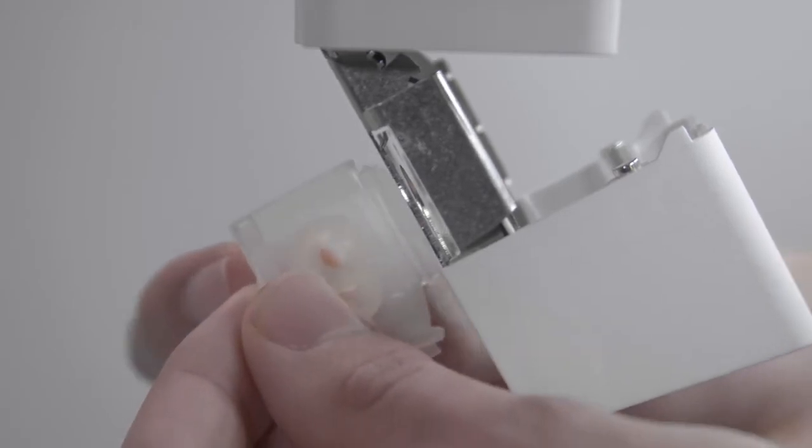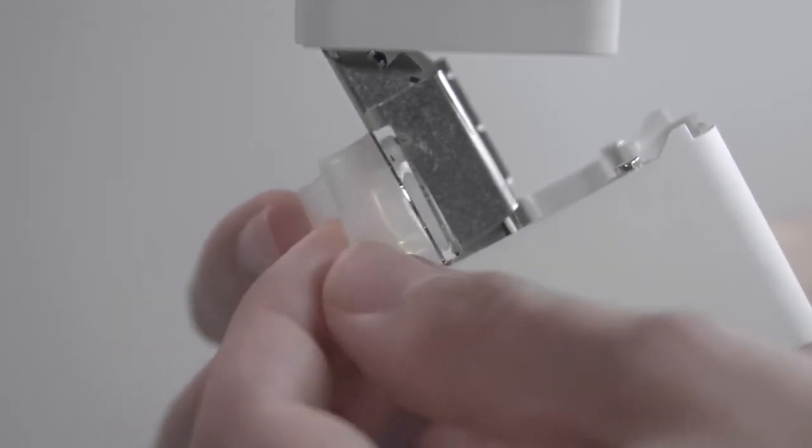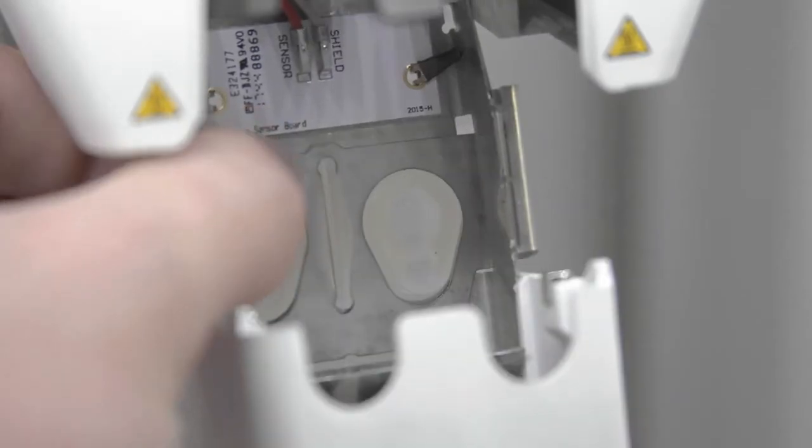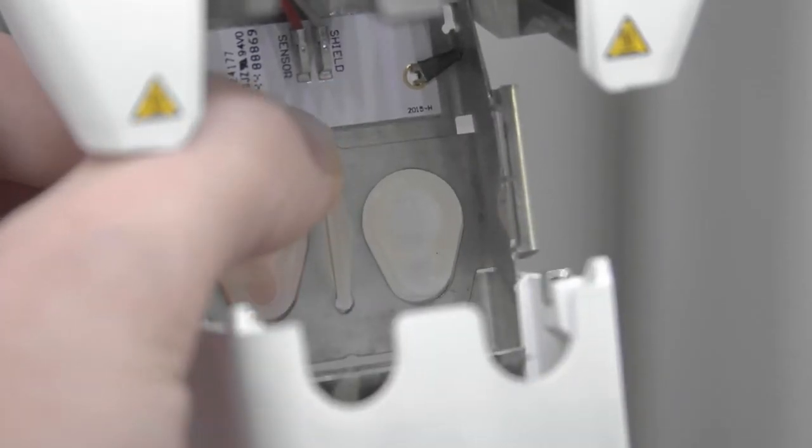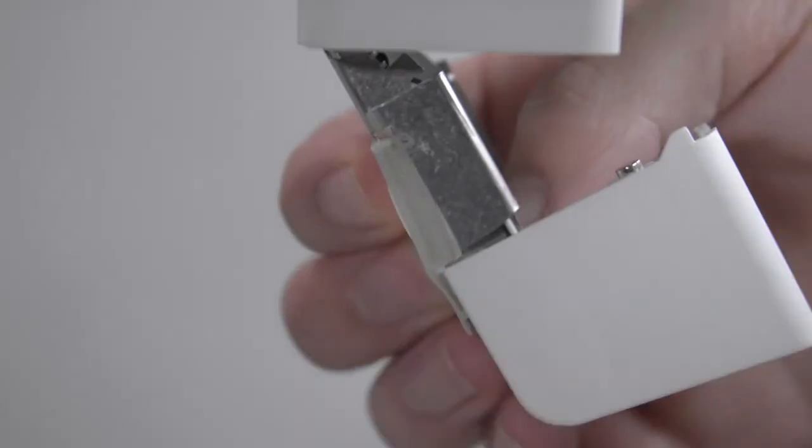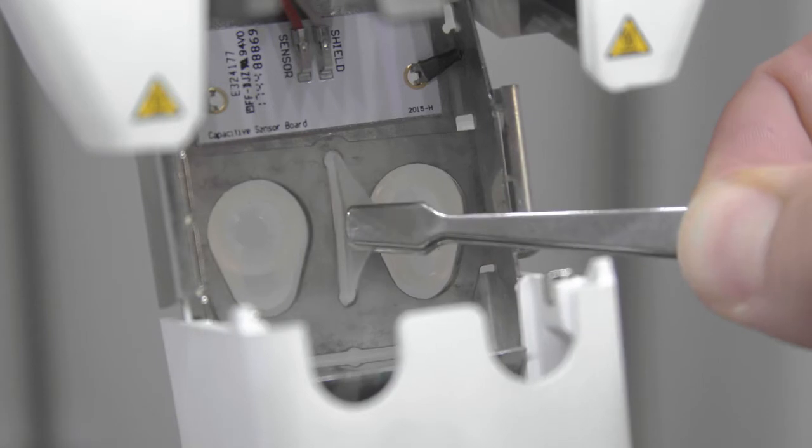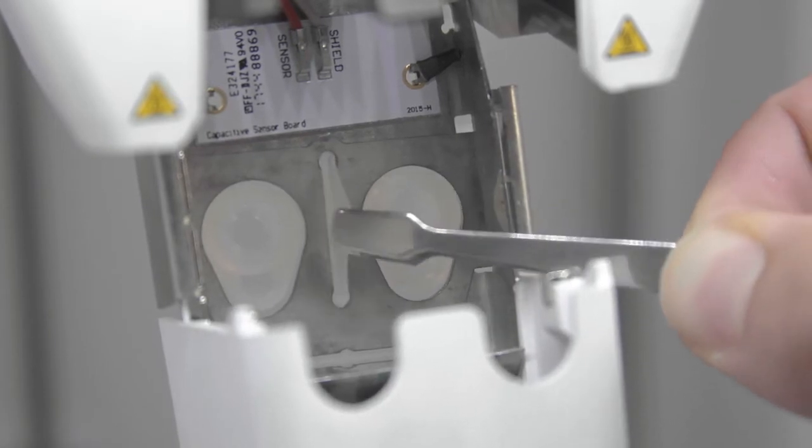Insert the middle tab of the nozzle cover through the slot in the printhead fan bracket. Hold the cover against the bracket and with your thumb, apply pressure to the metal plate from the inside of the printhead. Use flat-tipped tweezers to pull the tab through the bracket and plate until the seal locks the cover in place.